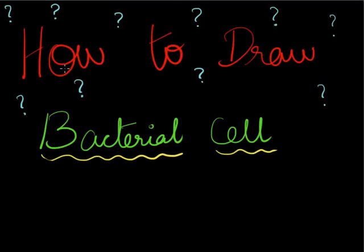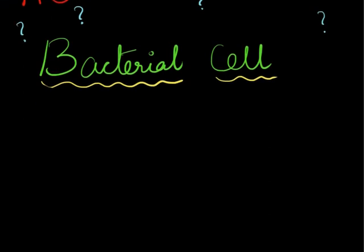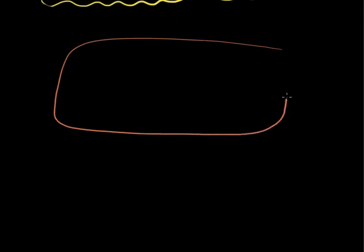Hi, today in this video we are going to see how to draw a bacterial cell. We begin by drawing the outer boundary for the cell in a rectangular shape but with rounded corners.